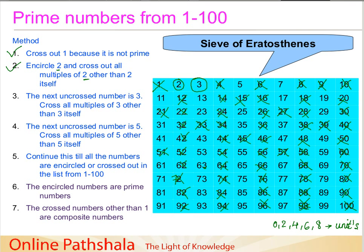63 is a multiple of 3, so we cross it out. 69 — yes, 3 is a multiple of this, so we cross it out.